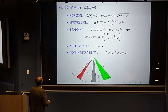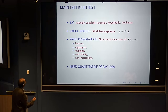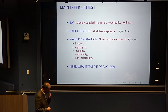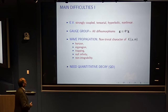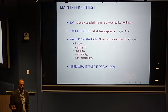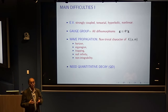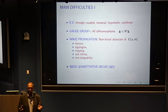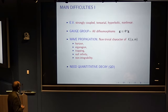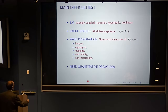Let me summarize the main difficulties. The Einstein vacuum equations are strongly coupled, tensorial, hyperbolic (wave character), and nonlinear — the worst possible combination. The Kerr solution is also non-trivially complicated because of the horizon, the trapping region, null infinity, and the non-integrability we discussed. These are the non-trivial features of the Kerr background.